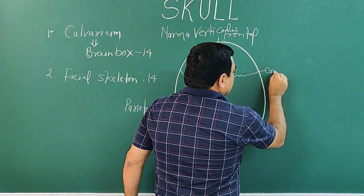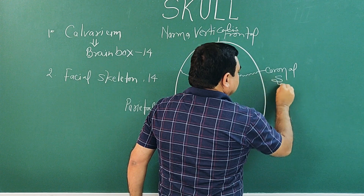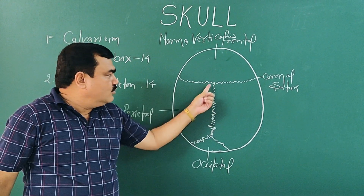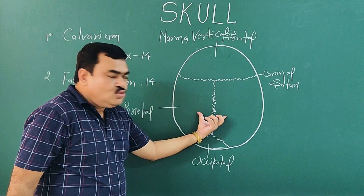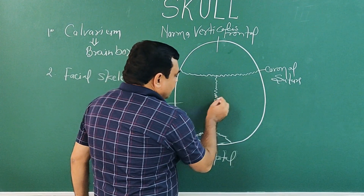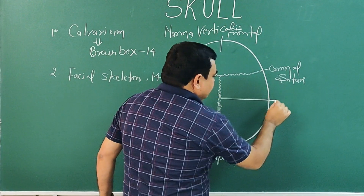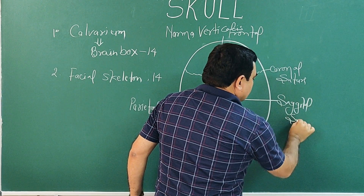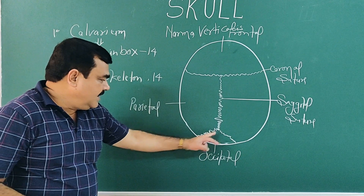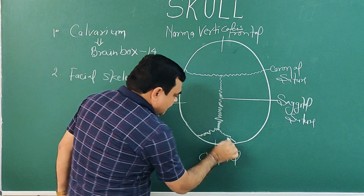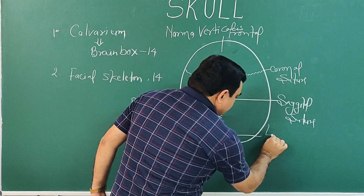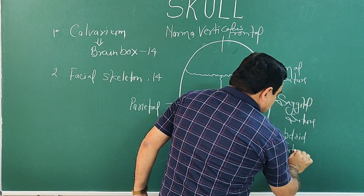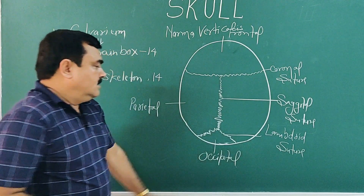The coronal suture lies between the frontal bone and the two parietal bones. Between the two parietal bones is the sagittal suture. Posteriorly, there is the lambdoid suture.